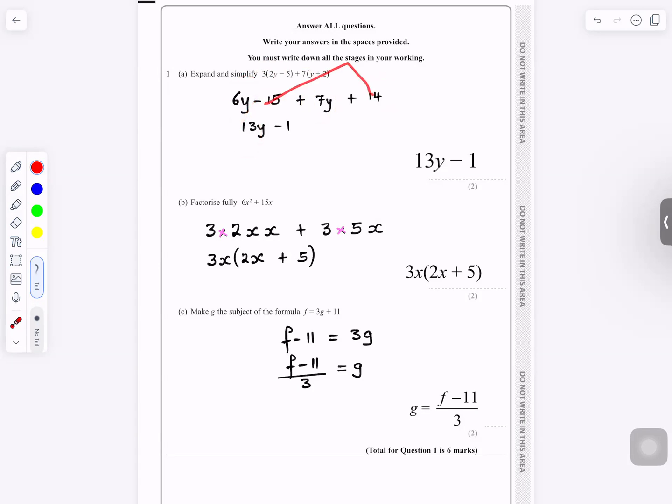Minus 15 plus 14 is minus 1, so your answer is 13y minus 1.